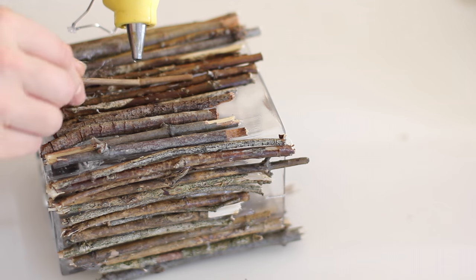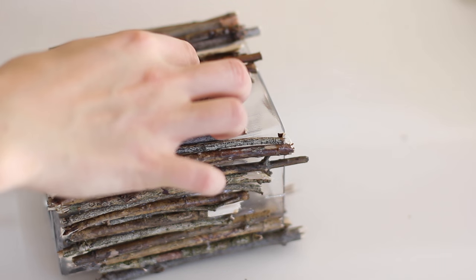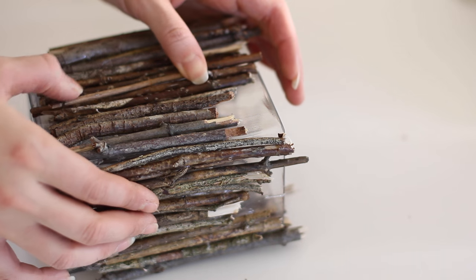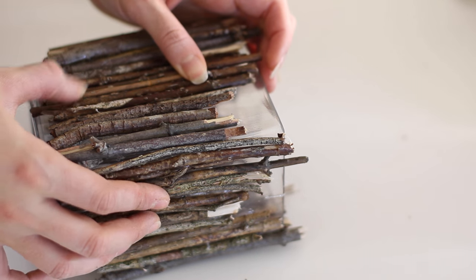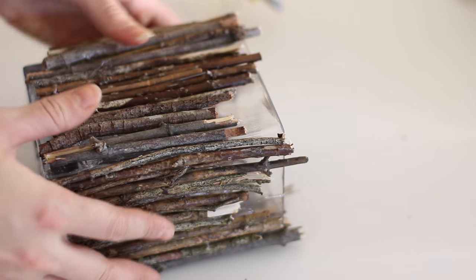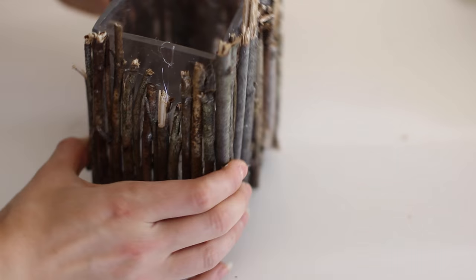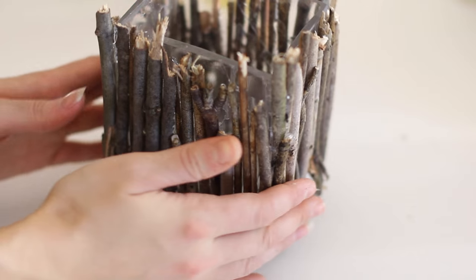This next DIY is super easy. I had a bunch of old vases lying around my house and I took some twigs and just glued them all around the outside to give a candle holder a new look so you just glue them, stick a candle in there and you have a really cool rustic votive that looks awesome all year round.